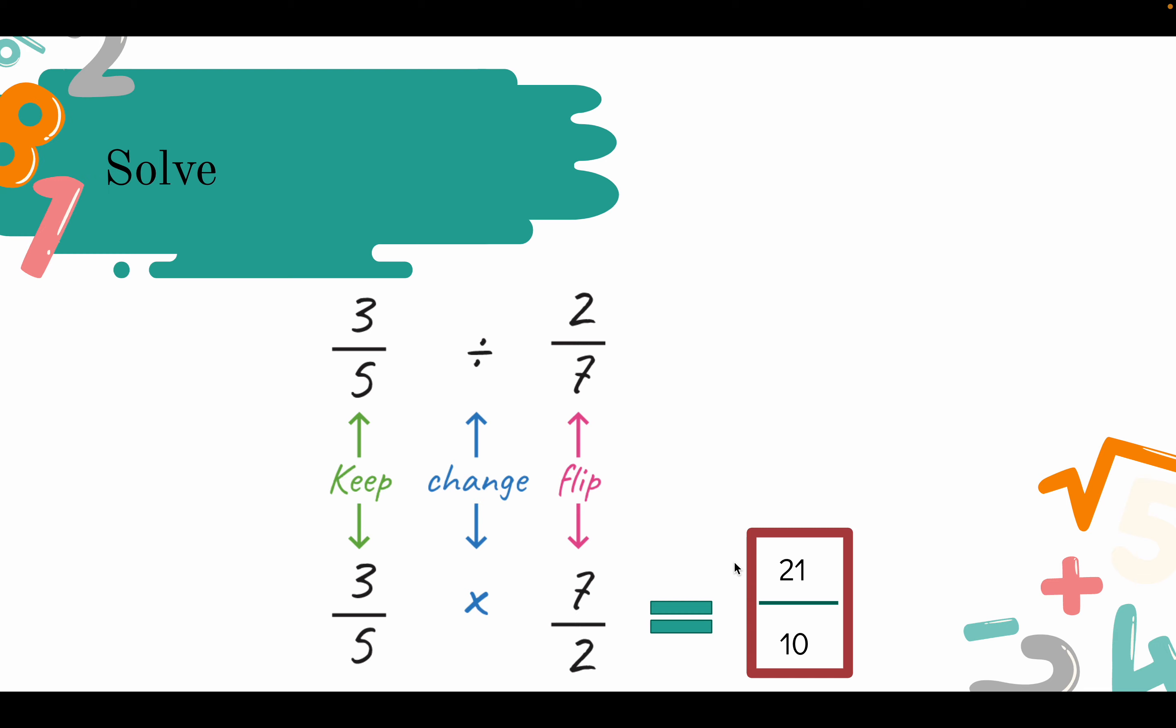And finally, just solve the problem. So you have 3 fifths times 7 over 2, which is 21 over 10. Multiplying fractions is really easy as well because you're just multiplying numerator by numerator and denominator by denominator. So you have 3 times 7 is 21, and 5 times 2 is 10.